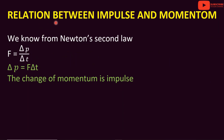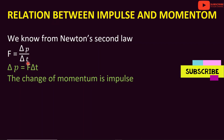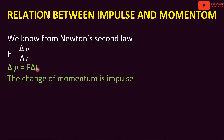Next is the relation between impulse and momentum. Newton's second law gives F is equal to delta P divided by delta T. Cross-multiplying: delta P is equal to F into delta T. Delta P is the change of momentum, and F into delta T is the impulse. So impulse is equal to the change of momentum — that is the relation between impulse and momentum.